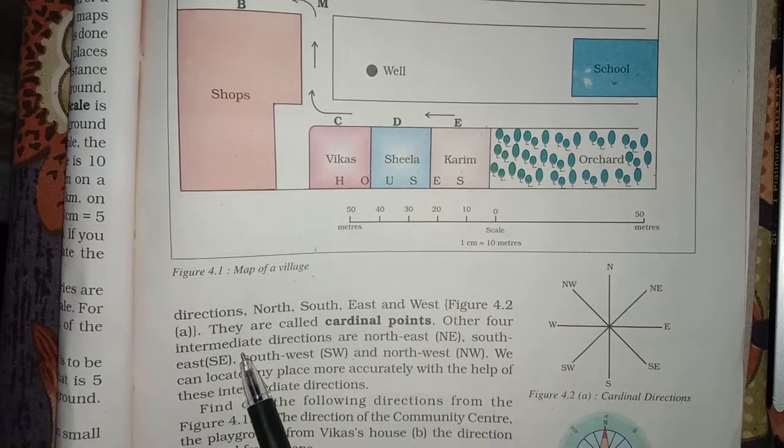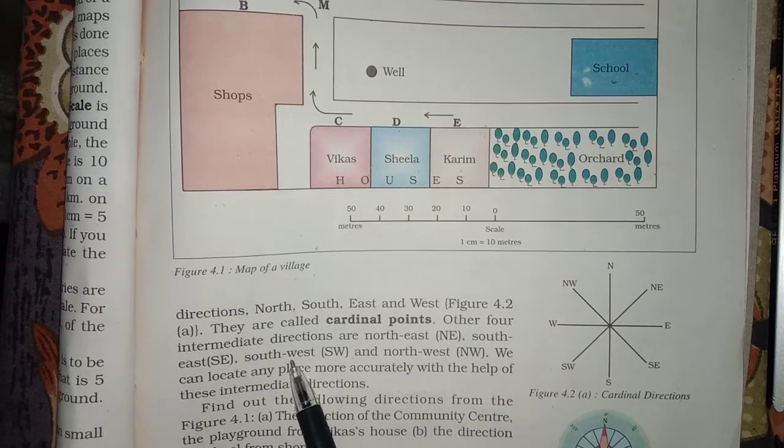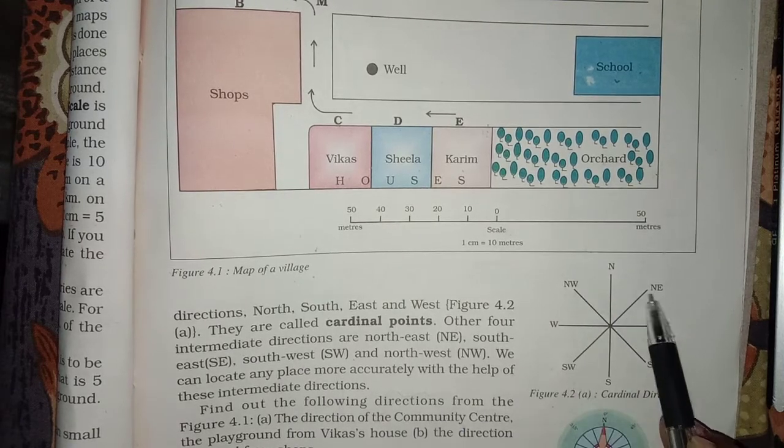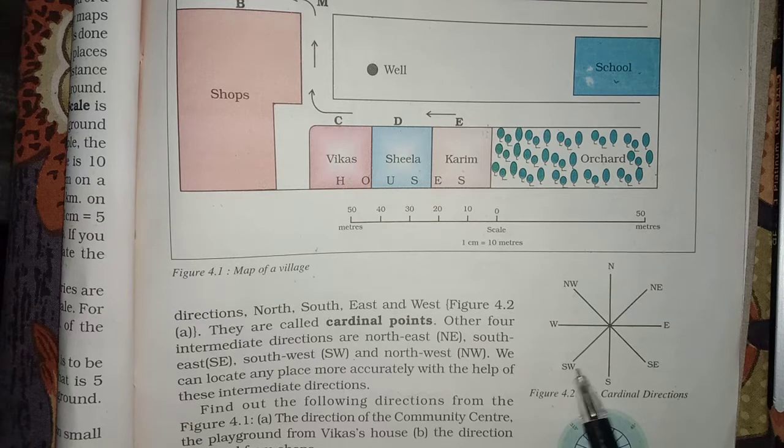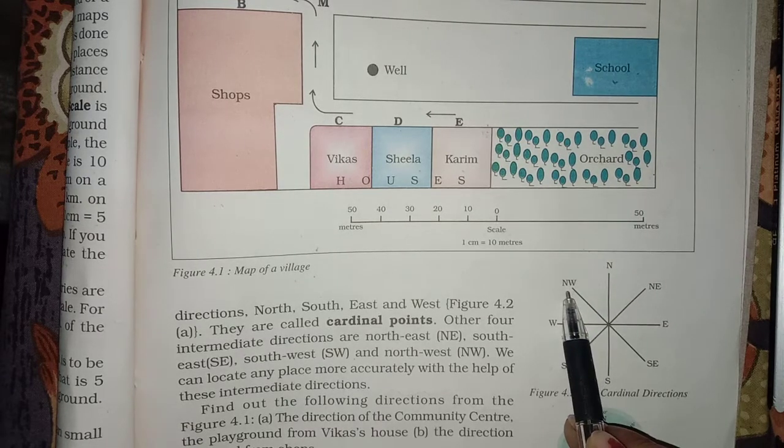Other four intermediate directions are North East, South East, South West and North West. We are here in diagram. North East, South West, South East, North West. What do they say? Intermediate directions.